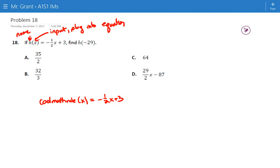Alright, well if I told you that I wanted you to tell me what happened when you plugged one into the CoolMathRule, then we would write that as the CoolMathRule of one is found by doing negative one-half times one plus three.